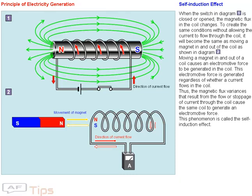Self-induction effect. When the switch in the diagram is closed or opened, the magnetic flux in the coil changes. To create the same conditions without allowing the current to flow through the coil, it will become the same as moving a magnet in and out of the coil as shown in the diagram. Moving a magnet in and out of a coil causes an electromotive force to be generated in the coil, regardless of whether a current flows in the coil.